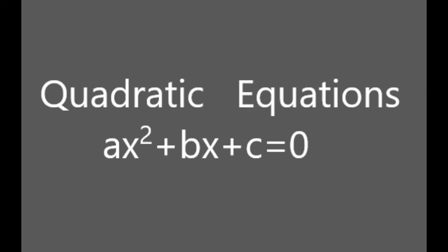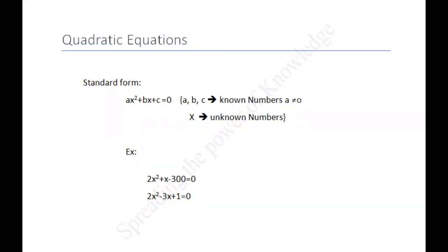Hi, welcome to Rina's YouTube channel. Today we are going to see about quadratic equations. A quadratic equation is any equation that can be rearranged in standard form as Ax squared plus Bx plus C equal to 0, where x represents an unknown number and A, B and C represent known numbers, while A is not equal to 0.